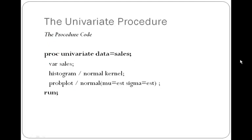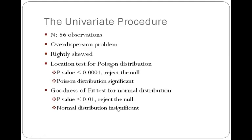In the first part of the project, I examined the Poisson distribution using the univariate procedure. I specified the data as sales for the detergent sales data set, specified the variables as sales, asked for the histogram and the probability plot, and ran the coding. According to the results, there are 56 observations. The variance is a lot larger than the mean, so there is a potential overdispersion problem. The skewness indicated by the result output is positive, indicating that the data is right-skewed.